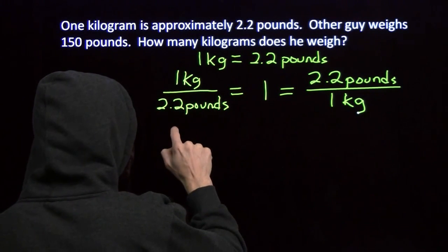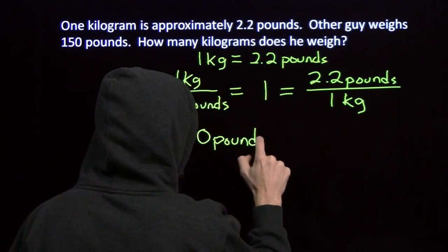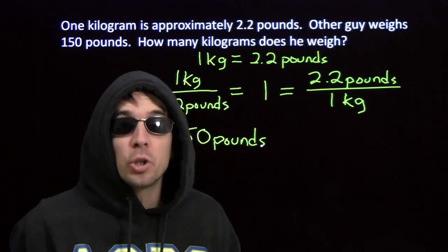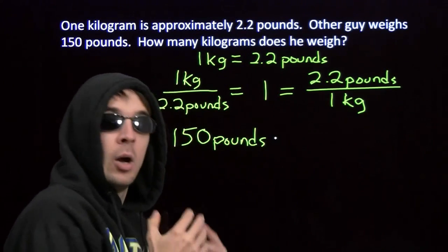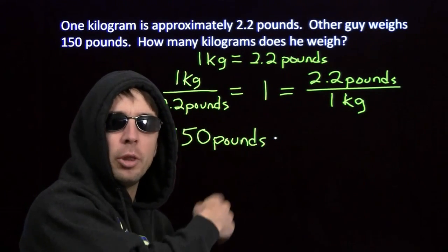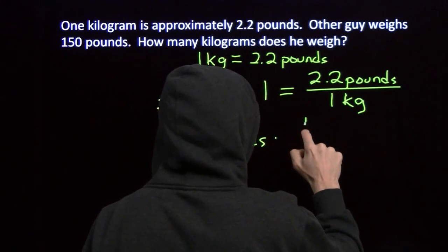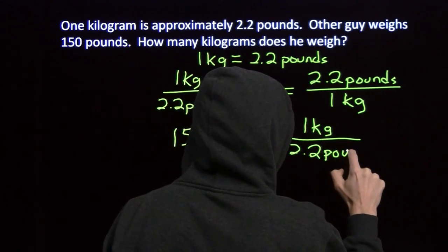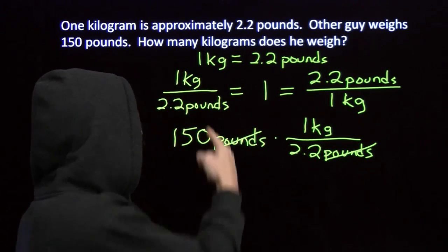Here's how it works. We've got 150 pounds for that little other guy, and we're going to strategically multiply by 1. We multiply by the conversion factor that cancels the pounds out — we want the one with pounds in the denominator. So we take 1 kilogram over 2.2 pounds. The pounds down here cancels with the pounds up here, and that's why we use this conversion factor, not that one.